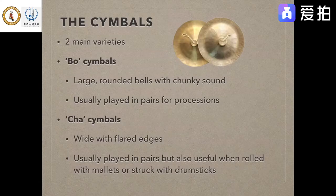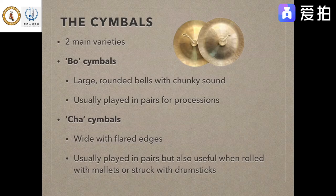Chinese cymbals contain two main varieties. We have the bo cymbals — large rounded bells with a chunky sound, usually played in pairs for processions. The other style is the cha cymbals, which are wider with flared edges. These are usually played in pairs but also useful when rolled with mallets or struck with drumsticks. Usually you'll see both types in a Chinese orchestra; it depends on the application of the music to decide which one you want.